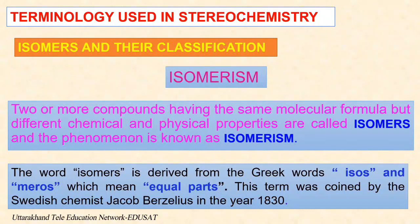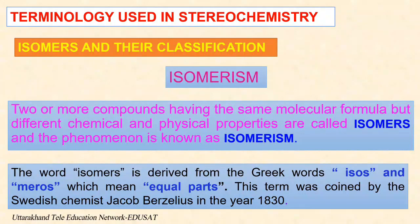Isomers are compounds with the same qualitative and quantitative composition of elements. Therefore, their relative molecular weight and general formulas are identical, but the structures such as sequence of bonding and arrangement of the atoms or groups in space are different. This variation of structure can lead to different physical and chemical properties, and hence these compounds behave as different compounds with the same molecular formula.